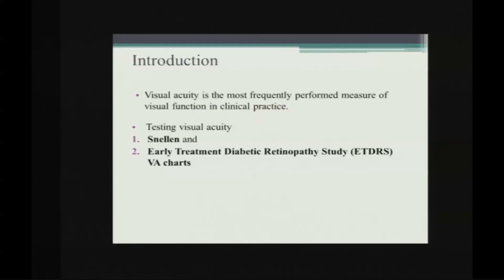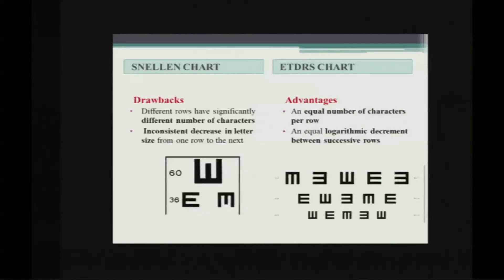Visual acuity is the most frequently performed test in OPDs, so we use the common Snellen chart and also the ETDRS charts. A Snellen chart has different numbers of rows and characters per row with no logarithmic decrease in letter size, whereas ETDRS has an equal number of characters and a logarithmic decrease in size between successive rows.